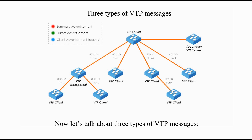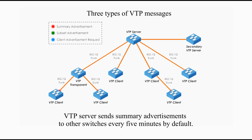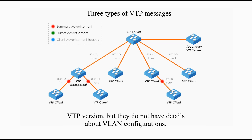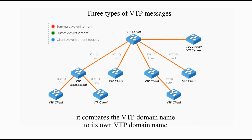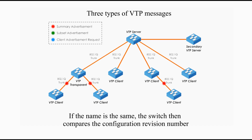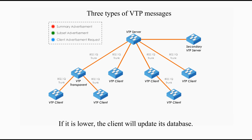Now let's talk about three types of VTP messages: summary advertisements, subset advertisements, and advertisement requests. VTP server sends summary advertisements to other switches every 5 minutes by default. Summary advertisements include the current VTP domain name, the configuration revision number, and VTP version, but they do not have details about VLAN configurations. When a switch receives a summary advertisement, it compares the VTP domain name to its own. If the name is different, the switch simply ignores the packet. If the name is the same, the switch compares the configuration revision number to its own. If its own revision number is higher or equal, the packet is ignored. If it is lower, the client will update its database.